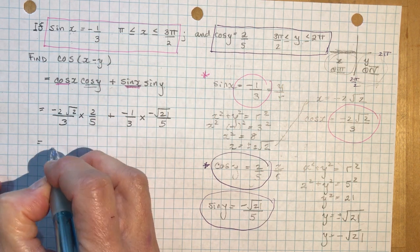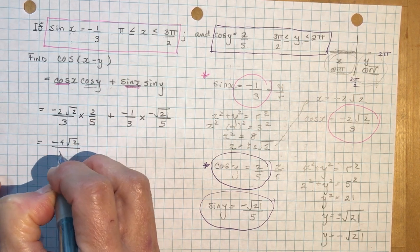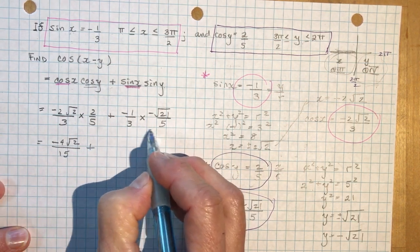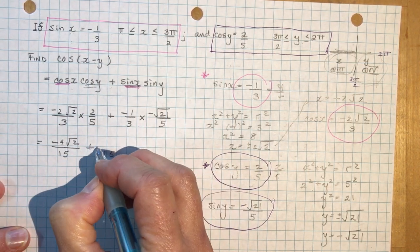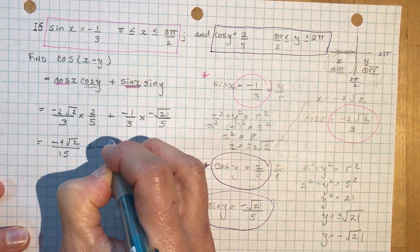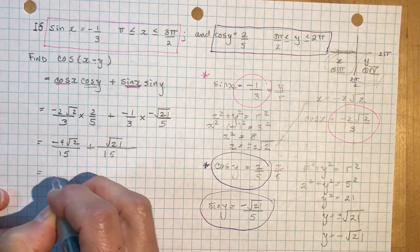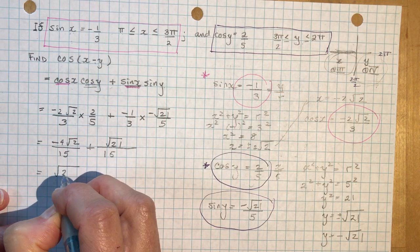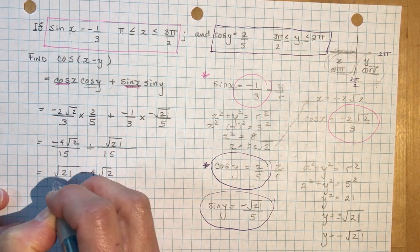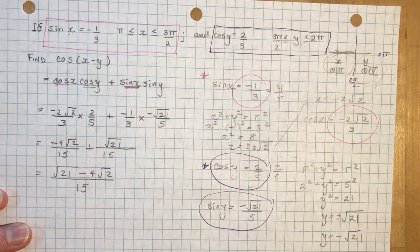So now you have to just do the little math part here. So minus 2 root 2 times 2 is minus 4 root 2. And it's over 15. We're just multiplying. And here we have over 15 as well. That's nice. And we have minus 1 times minus root 21 is the square root of 21. So in the end, I'm just going to switch this around because it looks a little neater. Root 21 minus 4 root 2 over 15. And that's how you do those crazy questions.